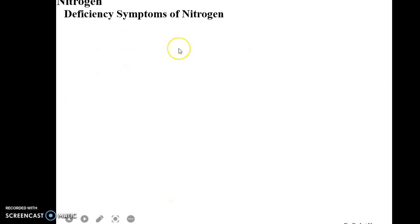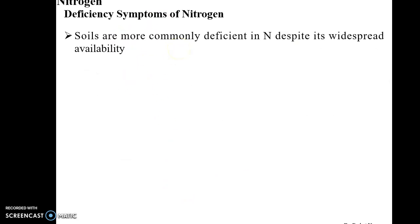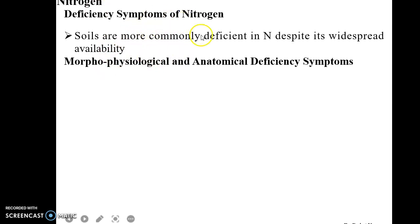If we talk about deficiency symptoms of nitrogen within plants, soils are mostly deficient in nitrogen despite its widespread availability. Why? Because in inert form, it is not very active and not available to plants.